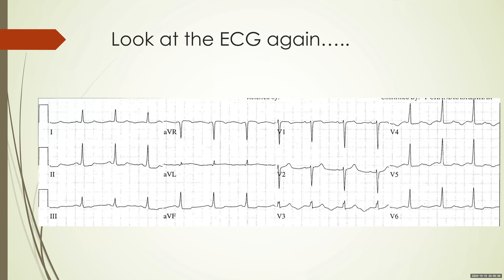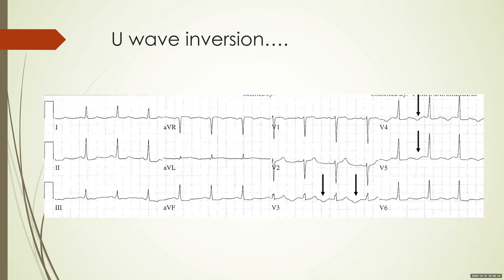Now let's go back to the initial ECG. Have a look at it once more and try to find out: is there anything in the ECG which suggests a sinister etiology? What have we missed? Can you name the waves of the electrocardiogram? On the next ECG, you can see marked U-wave inversions in V3, V4, and V5. The U-wave is normally a positive polarity wave, so these are clear-cut U-wave inversions.